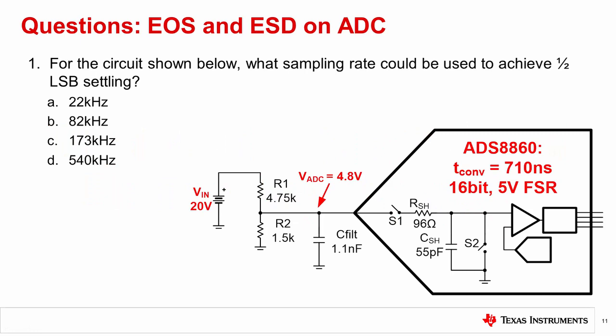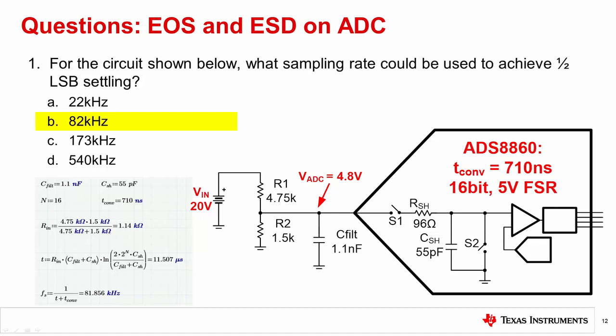Question 1. For the circuit shown below, what sampling rate could be used to achieve 1 half LSB settling? The correct answer is B, 82 kHz. The input impedance is the parallel combination of R1 and R2. This is used with the settling equation to find the acquisition period and finally the sampling rate.